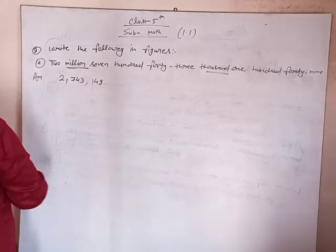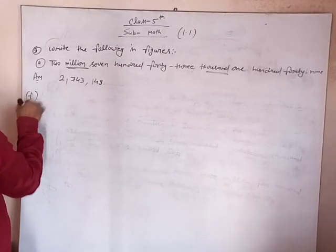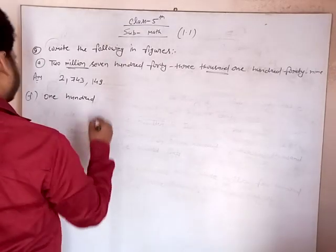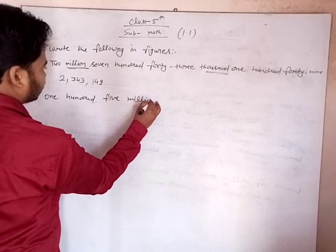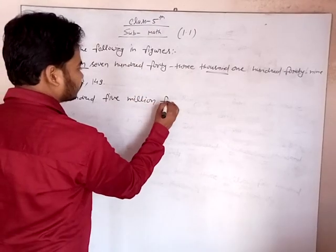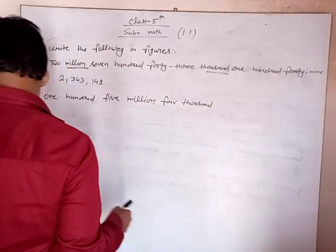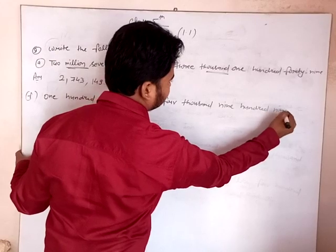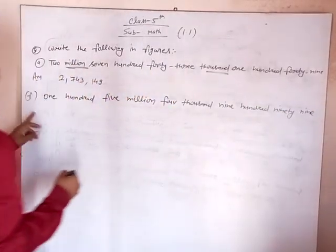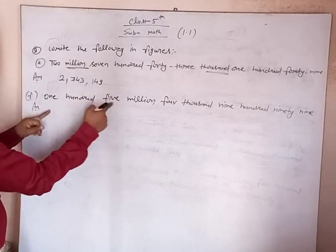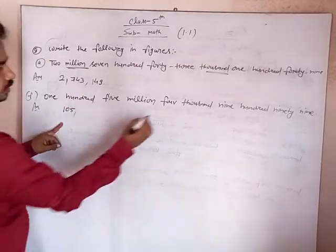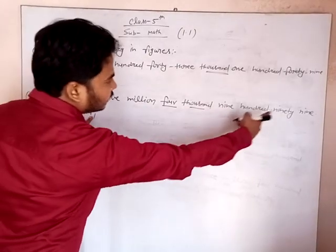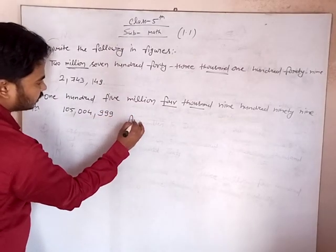In question number E, suppose we take 5,000,000 plus 5,000 plus 4,000 minus 4,999. We get 105,004,999. This is the thousands period — 4,999. This is the required answer. Clear?